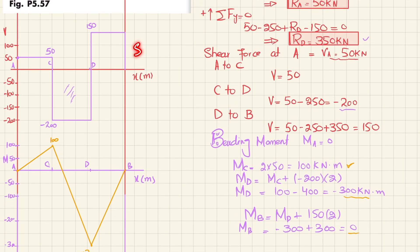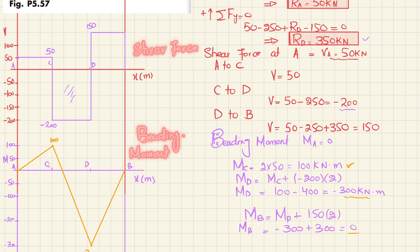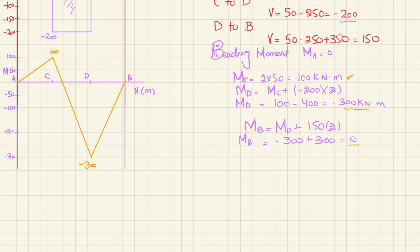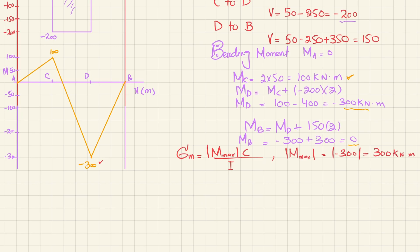This is your shear force diagram and this is your bending moment diagram. Now for the second part: find the maximum bending stress, which equals the maximum bending moment times c divided by I. The absolute maximum bending moment from the diagram is 300 kilonewton·meters. Dividing numerator and denominator by c gives I divided by c, which is the section modulus S.